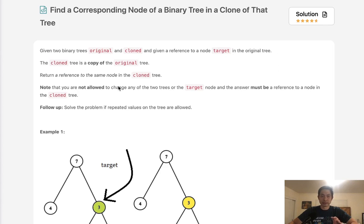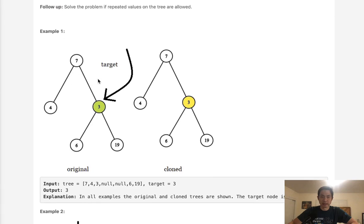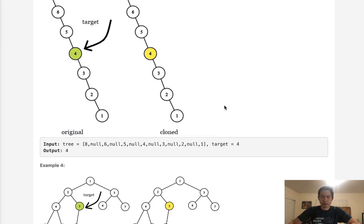The clone tree is an exact copy, a replica of the original tree. What they want us to do is return a reference to the same node in the clone tree that is in the original tree. So we have two trees, the original and the cloned, and we want to return the same node that's given to us by target but in the cloned tree.